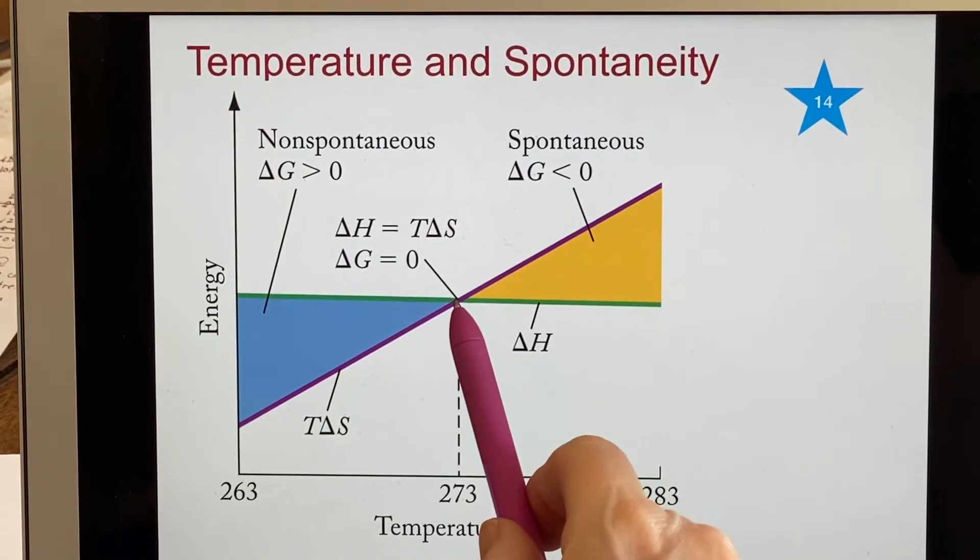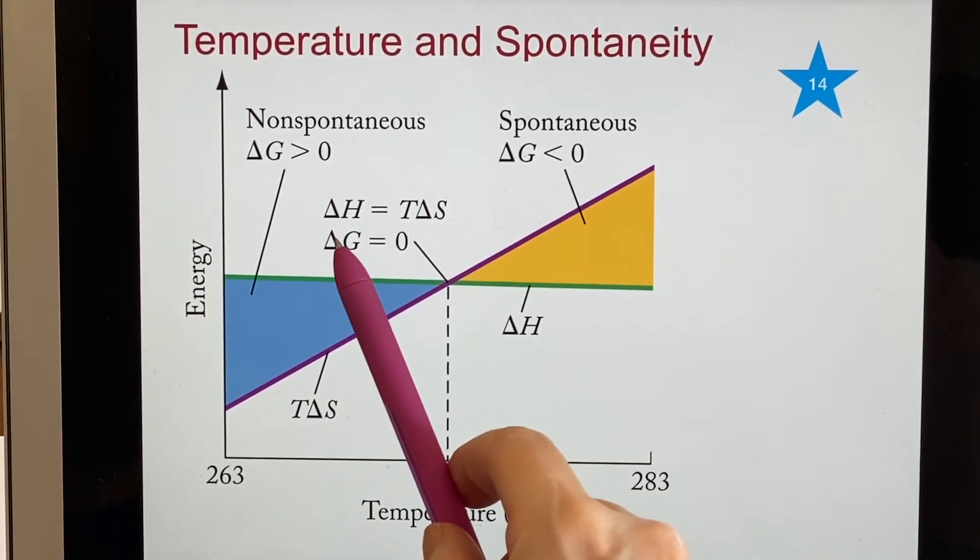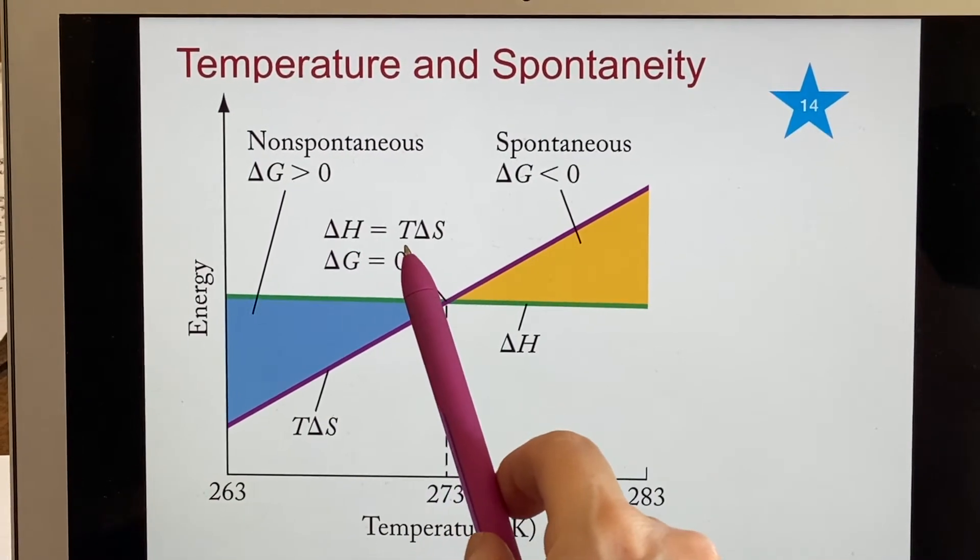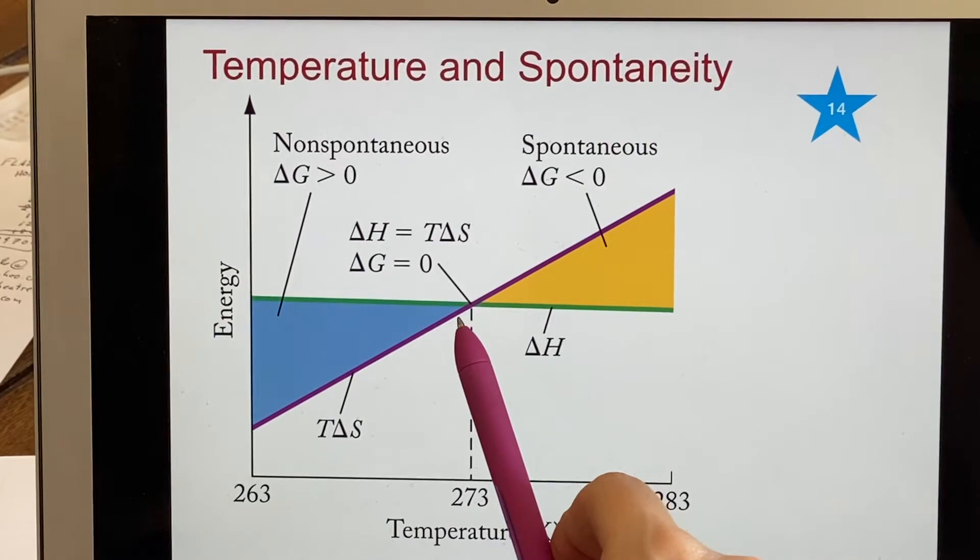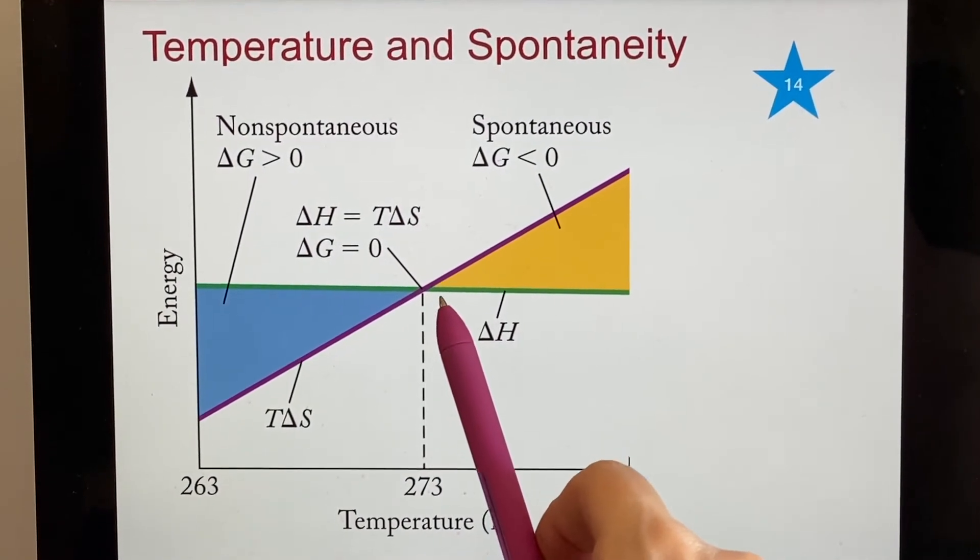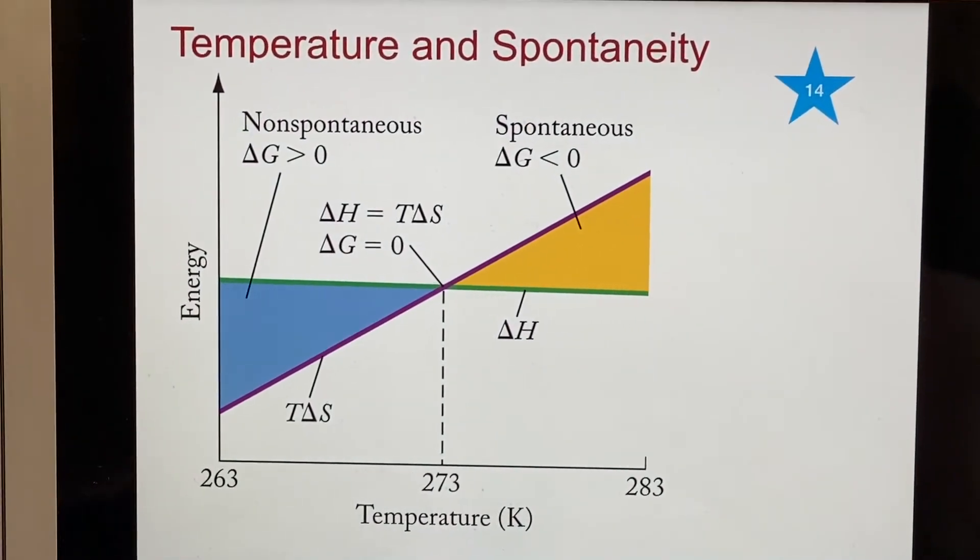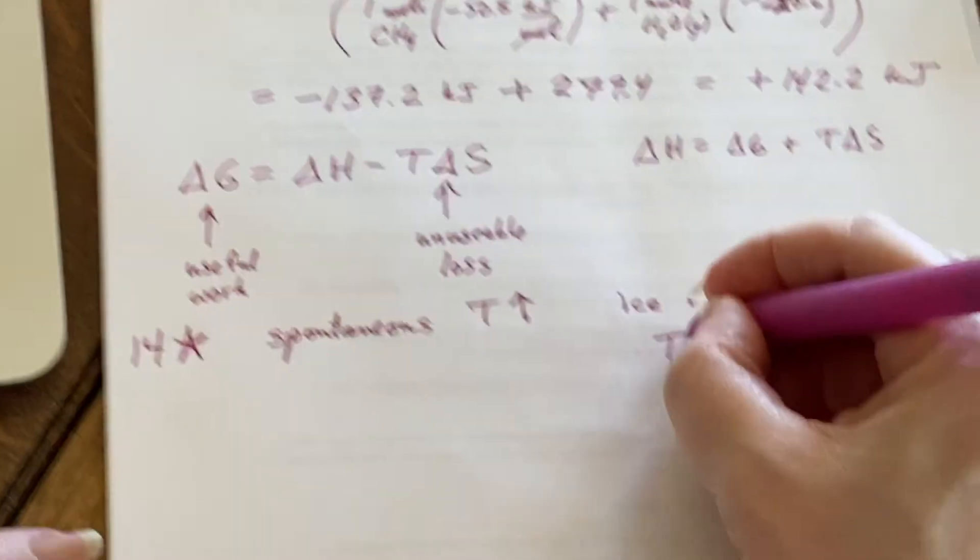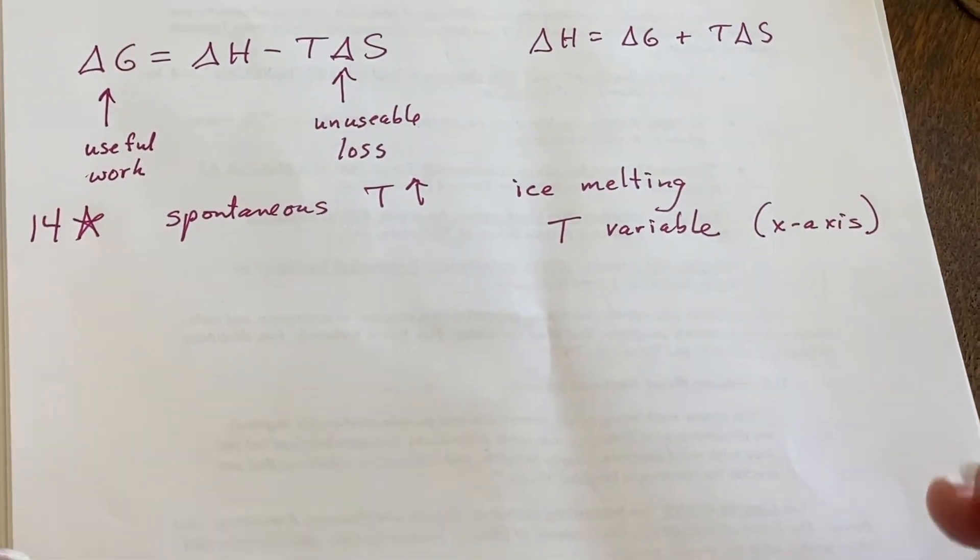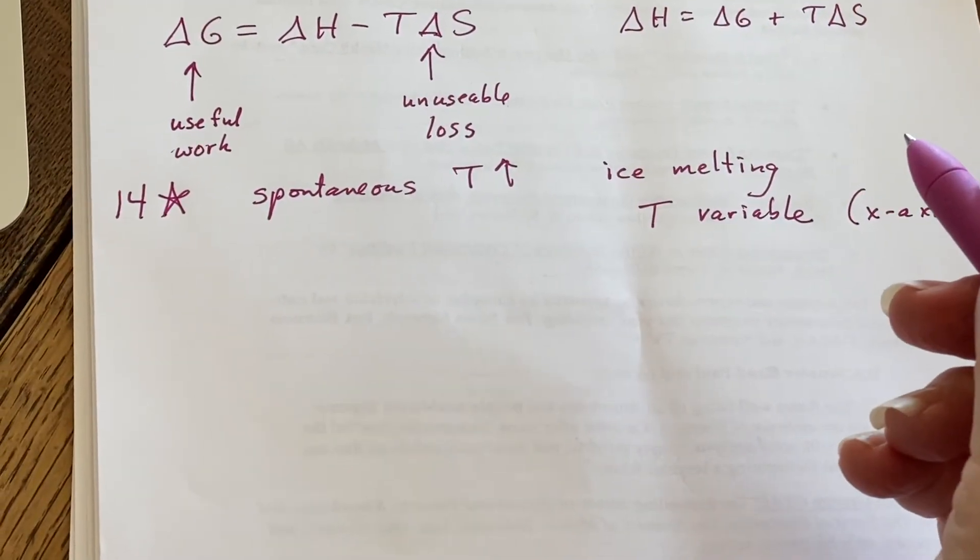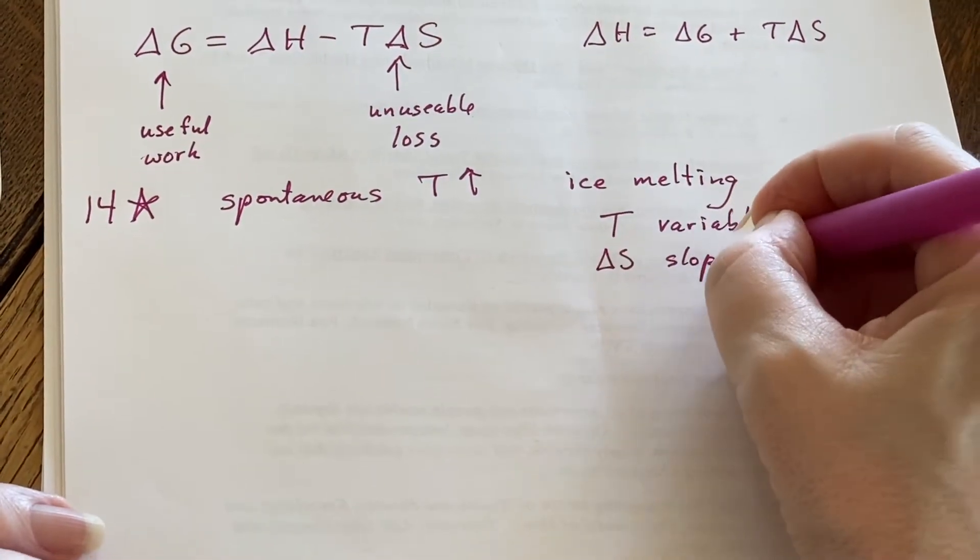So T delta S then has this, and where they cross is where delta G is zero. That would mean that delta H is just exactly T delta S at that point. So this is telling us a little bit more about how we should be viewing this. We're using T as the variable then. It's displayed on the x axis. And we can say that this energy versus temperature and delta S is the slope of one of the lines. And delta H is just straight across.